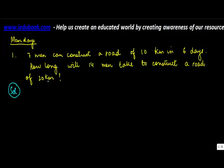Now unlike the other question, in this question there are three variables. One is number of men—seven men can construct a road of 10 kilometers. Second is the road in kilometers. In six days, and third is the number of days.